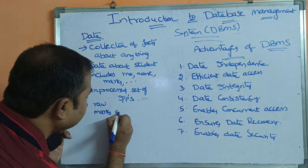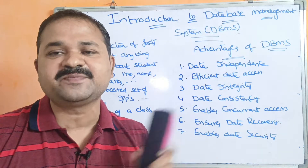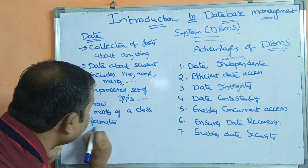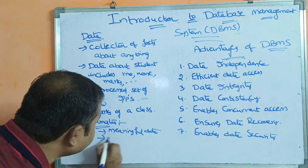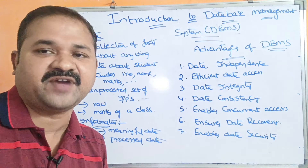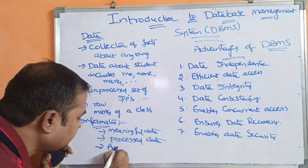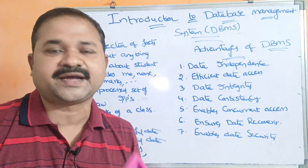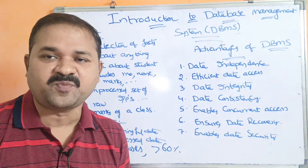The marks of a class represent data. Let's say a class contains 70 students — that 70 students' information is data. Now, information means meaningful data, i.e., processed data. For example, calculating the average marks of the class, or finding how many students got greater than 60 percent marks — these are examples of information.